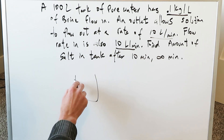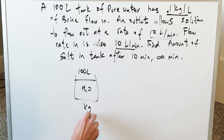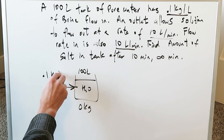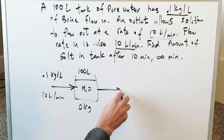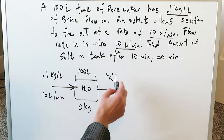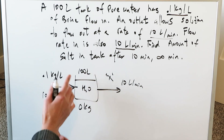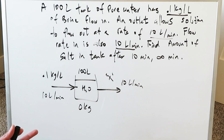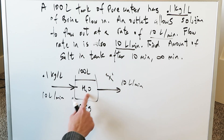Think about everything like this. You have a tank which is 100 liters of pure water — pure water means there's no salt in it, so there are zero kilograms of salt initially. You have a pipe flowing in bringing brine at 0.1 kilograms per liter at a flow rate of 10 liters per minute. The tank also has a flow out. It flows out at exactly the same rate as it flows in, so the volume of 100 liters never changes.